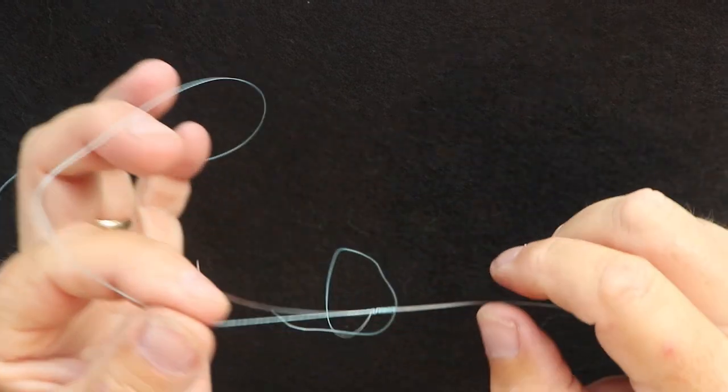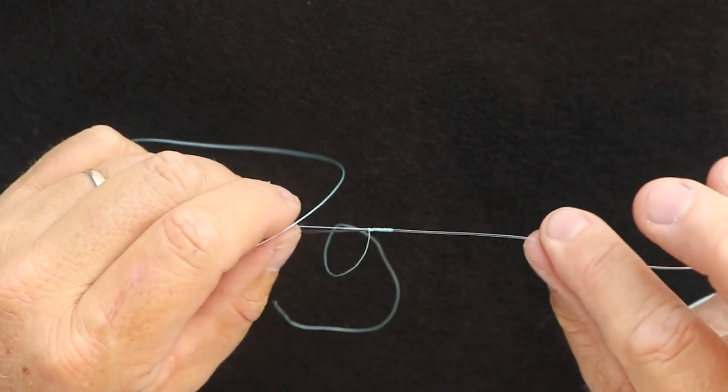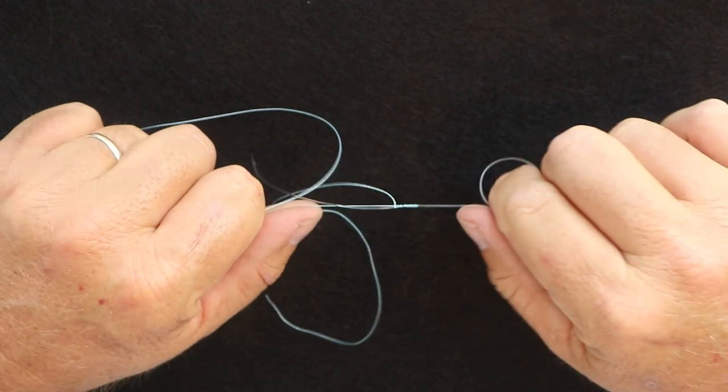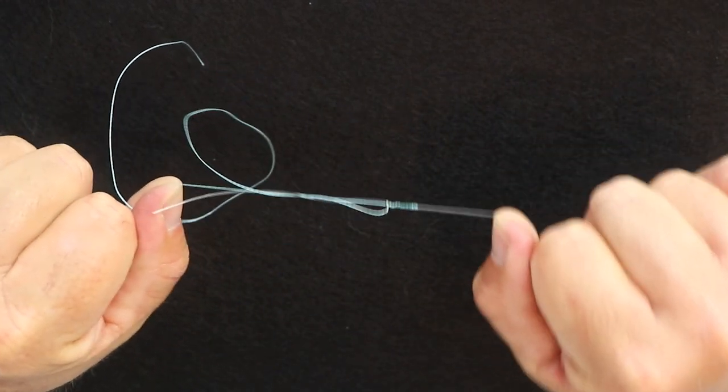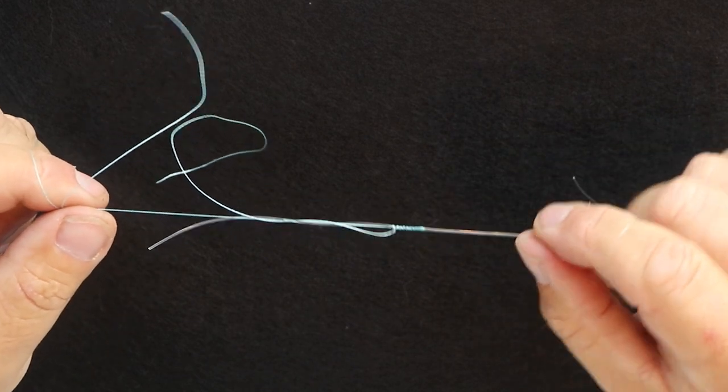what we're going to do is we're going to grab our main line and we're going to grab the leader. And we're going to go ahead and pull that down. We're going to cinch it really, really tight. And this is what's going to lock those coils into place on top of that leader material.